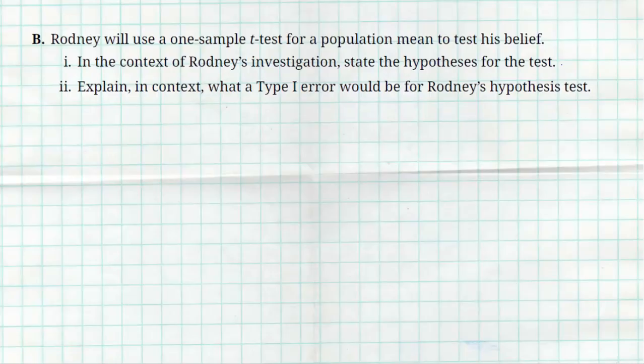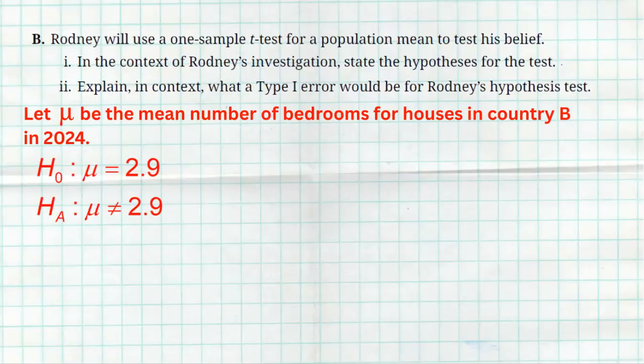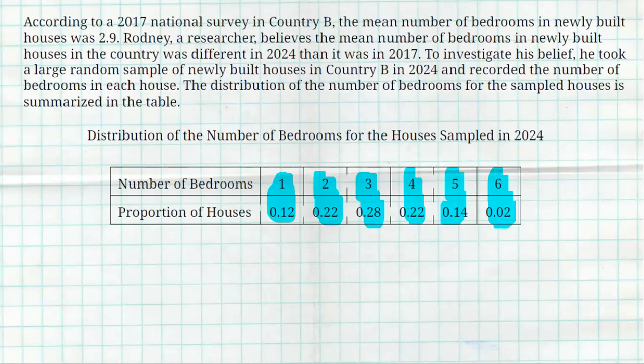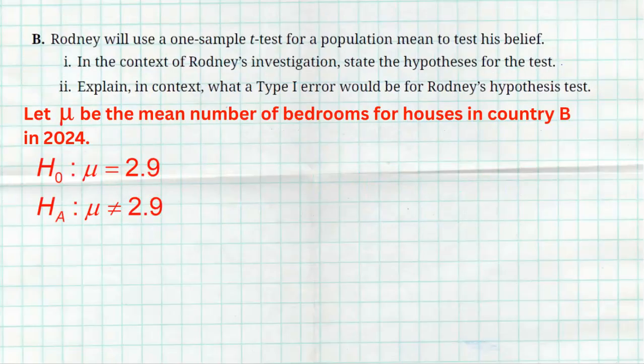First, define the parameter: let mu be the mean number of bedrooms in newly built houses in Country B in 2024. The null hypothesis is that the mean is the same as it was in 2017 — mu = 2.9. The alternative is that Rodney thinks it's different. The problem never says he thinks it's more or less, just different. That's why we use the not-equal-to sign for the alternative hypothesis.